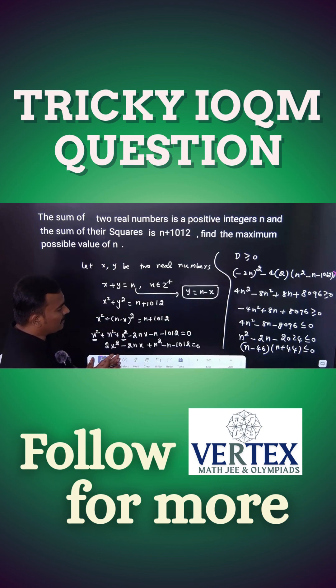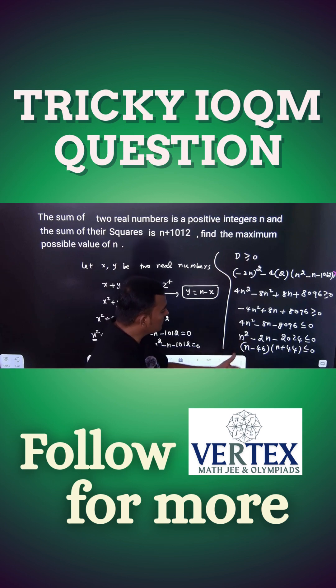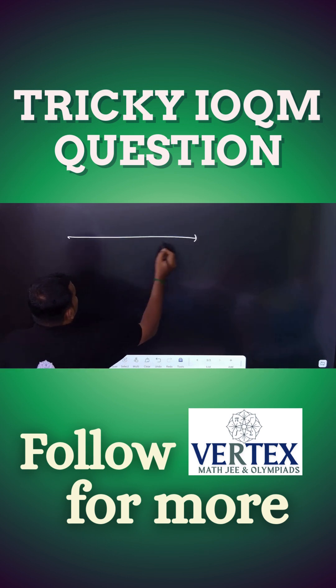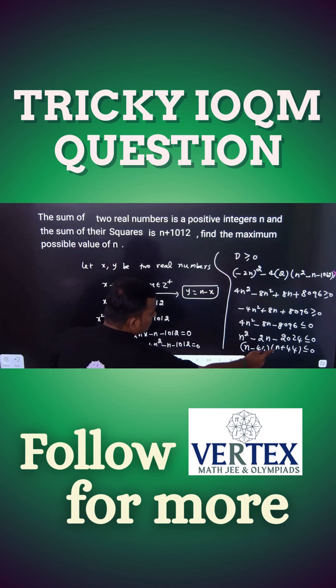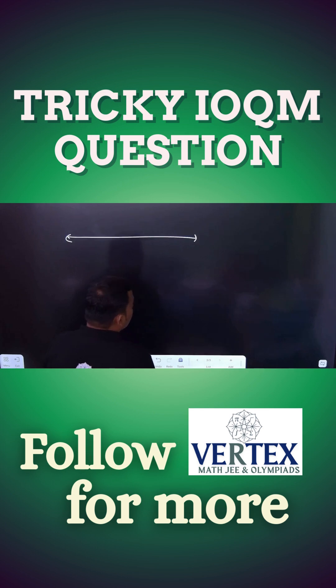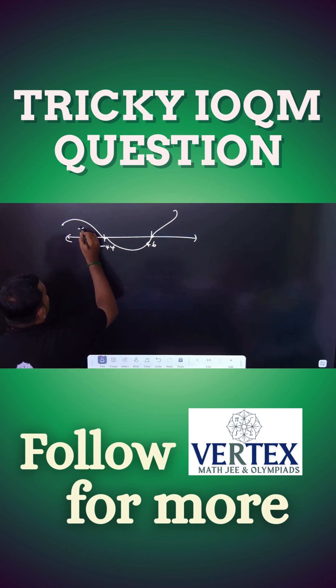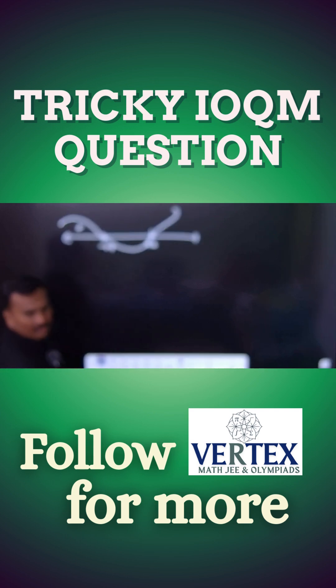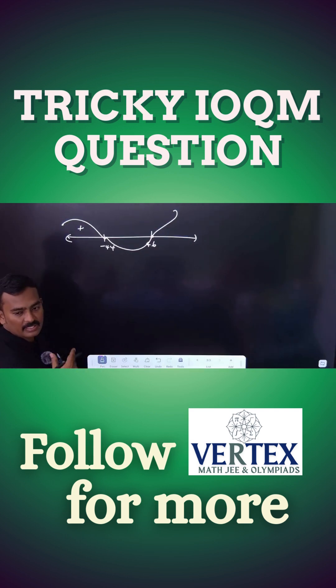Now you can use the Wavy curve method. Which positive integers are satisfied? What are the critical points here? Critical points are 46 and 44. Minus 44 and plus 46 is there. Start with the positive and negative and positive because if change the sign, each term is odd powers only.